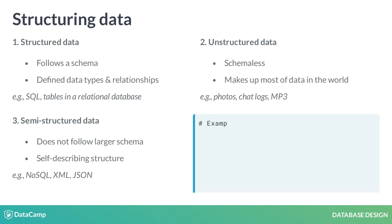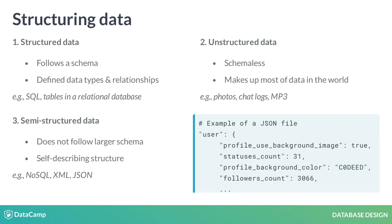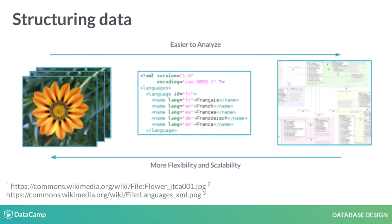Examples include NoSQL, XML, and JSON, which is shown here on the right. Because it's clean and organized, structured data is easier to analyze. However, it's not as flexible because it needs to follow a schema, which makes it less scalable. These are trade-offs to consider as you move between structured and unstructured data.